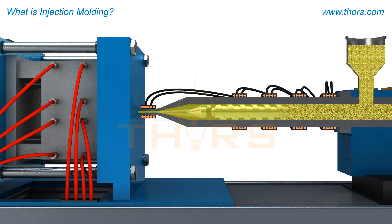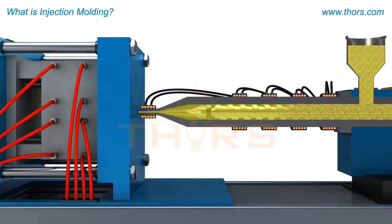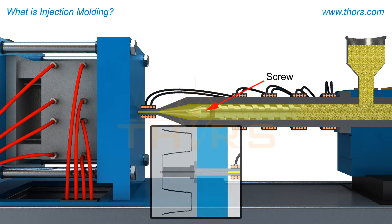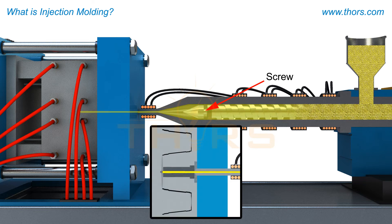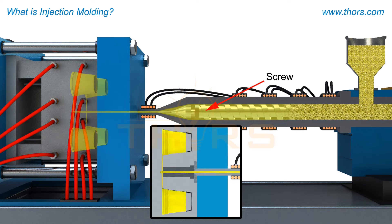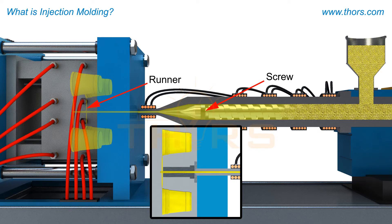Once melted, the material flows through a component of the screw called the check ring and accumulates in front of the screw. The screw then acts as a plunger by pushing the melted resin through a melt delivery system called a runner into the core and cavity of the mold.